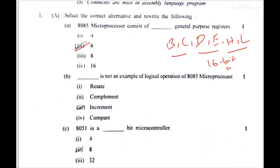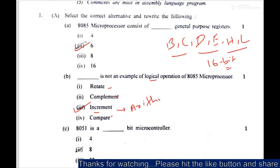Then the second one dash is not an example of logical operations of 8085 microprocessor. The first one is rotate, complement, increment and compare. So all OR, XOR and AND operations are the logical operations but increment and decrement are arithmetic operations. So the answer is increment as it is not a logical operation. It is an arithmetic operation.